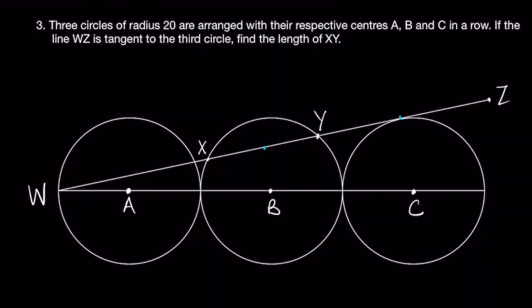Question 3. Three circles of radius 20 are arranged with their respective centers A, B, C in a row. If the line WZ is tangent to the third circle, find the length of XY.